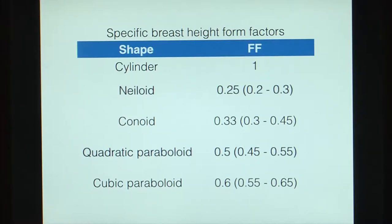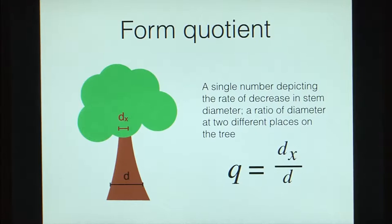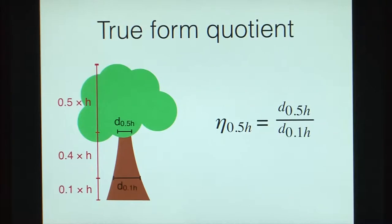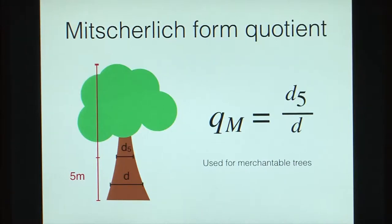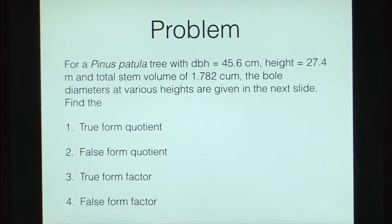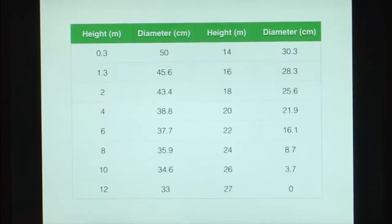We also looked at specific breast height form factors. Next, we defined form quotient as a single number depicting the rate of decrease in stem diameter — a ratio of the diameter at two different places on the tree. We defined false form quotient as the diameter at half the height, true form quotient as the ratio of two diameters at two different height percentages, and also looked at Mischelic and Hoennhal's form quotients.